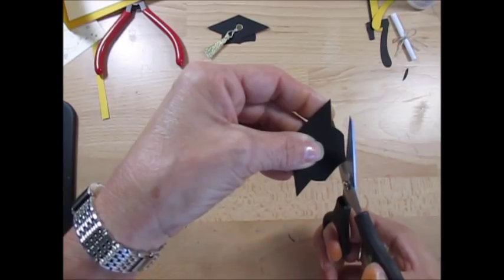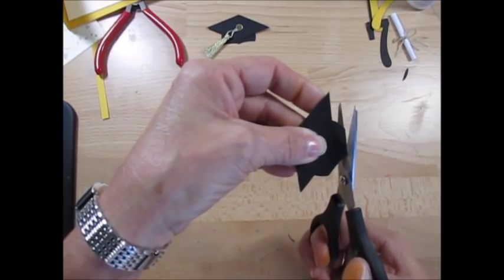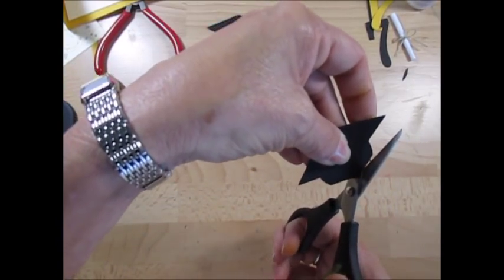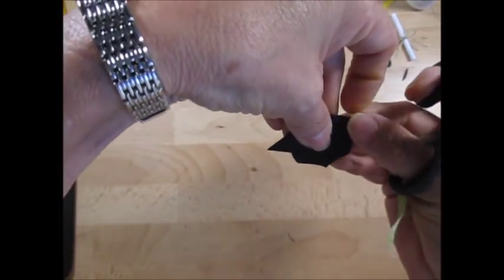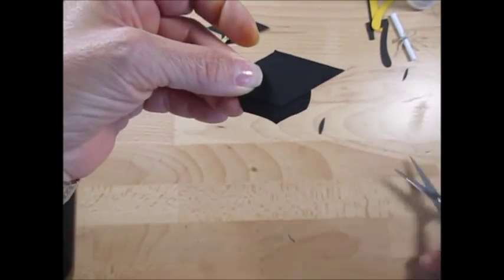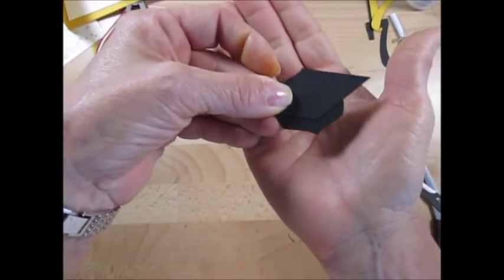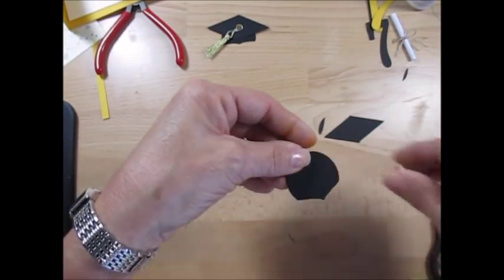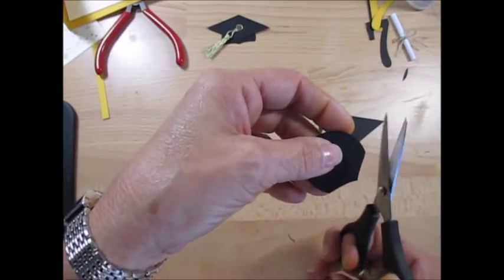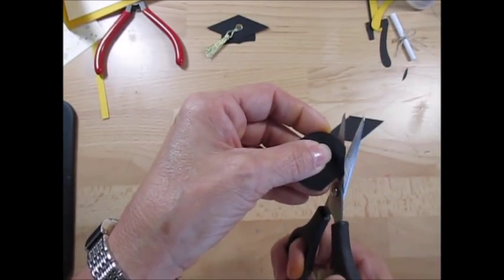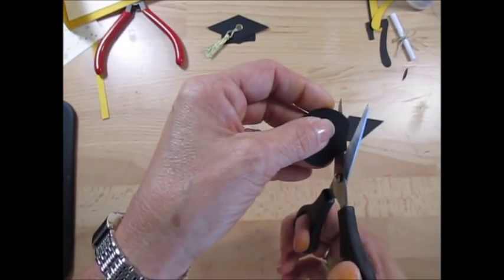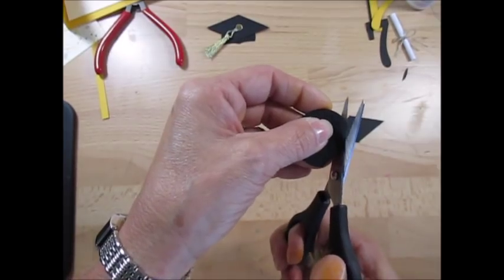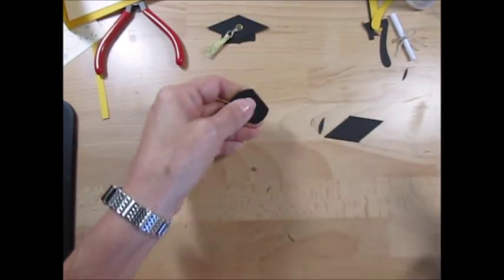So I'm going to take some off. So I just trim the bottom, and see when it's done, you get a nice shape of a hat. Now if it's too long at the top, you can trim that too. So I just did a little bit of fussy cutting here. Here we go, and I'm going to cut this.